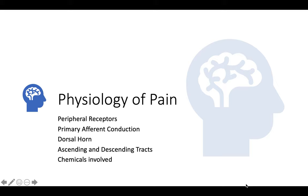Having introduced the management of acute pain broadly, we will now go into the physiology of pain, discussing the receptors involved, primary afferent conduction, integration of pain at the dorsal horn, the ascending and descending pathways, and the chemicals involved.